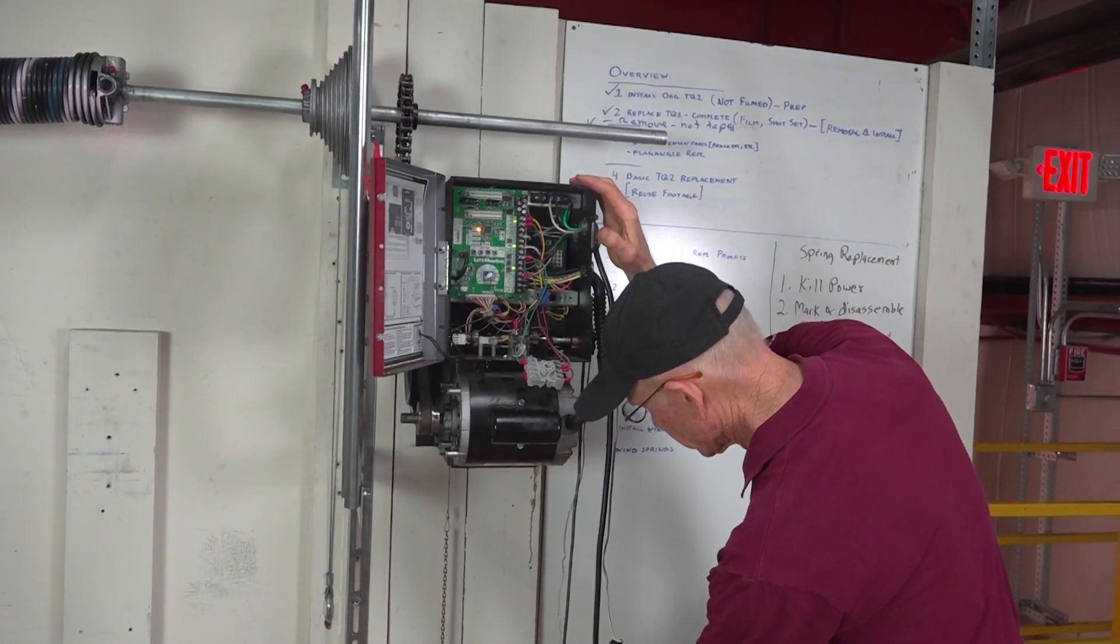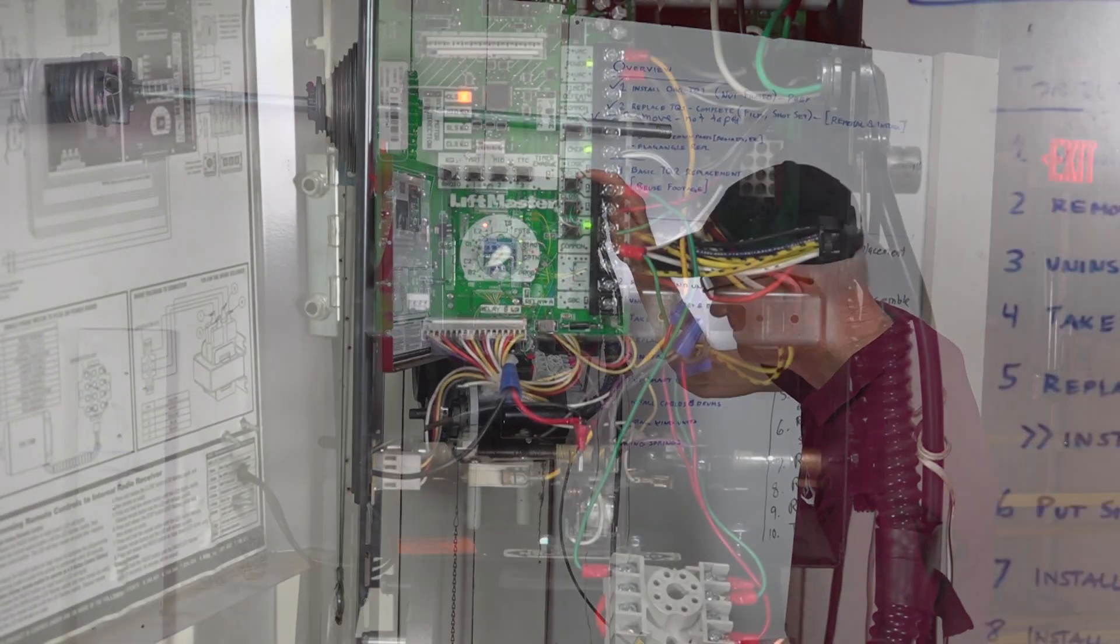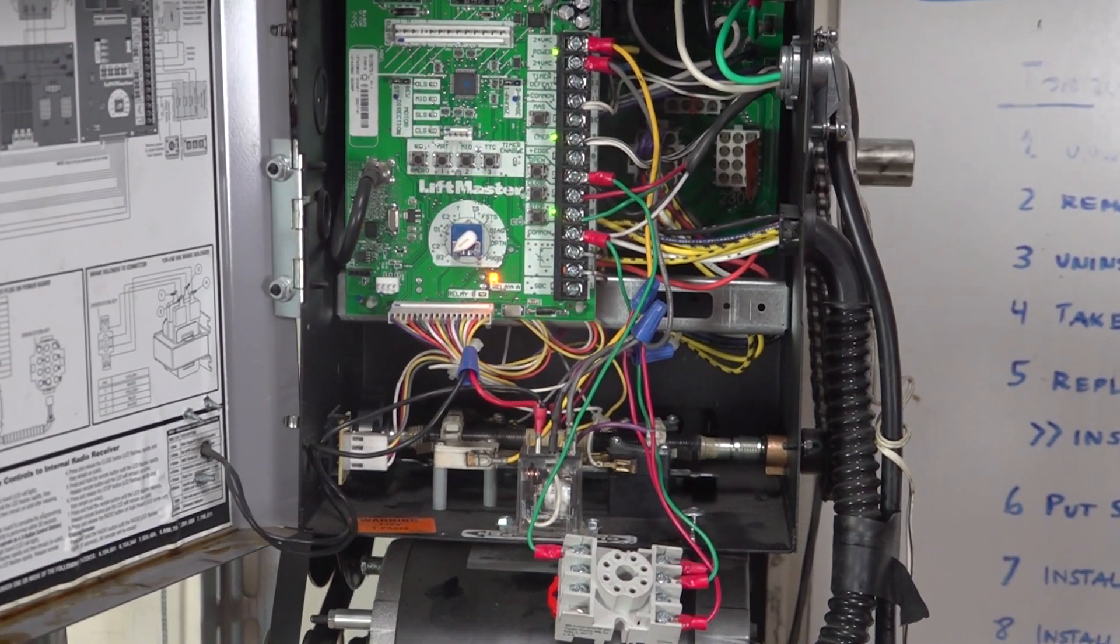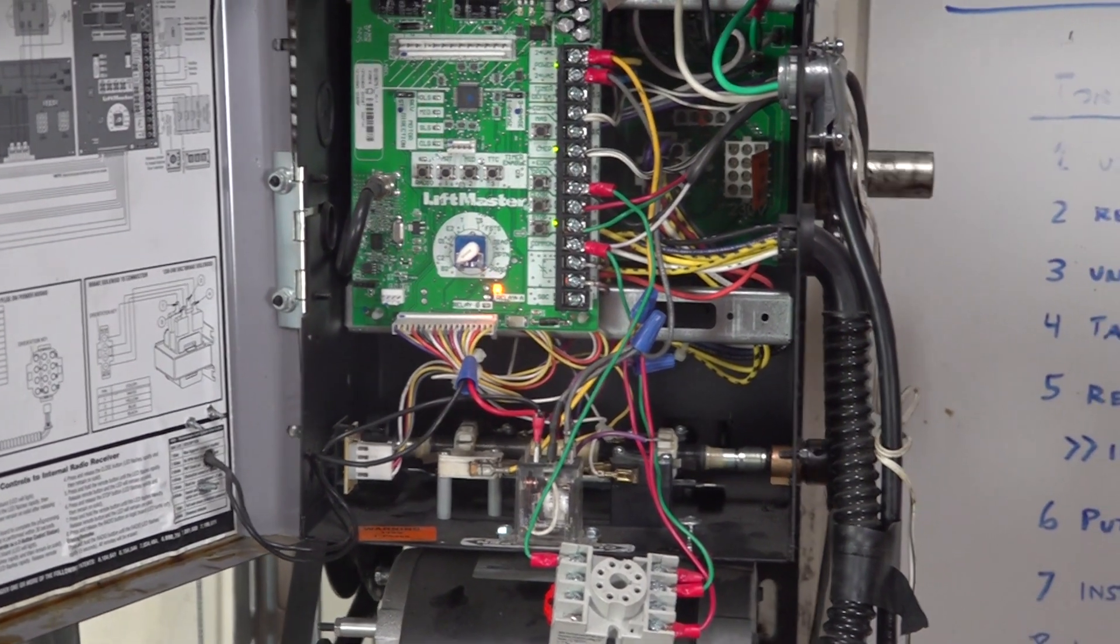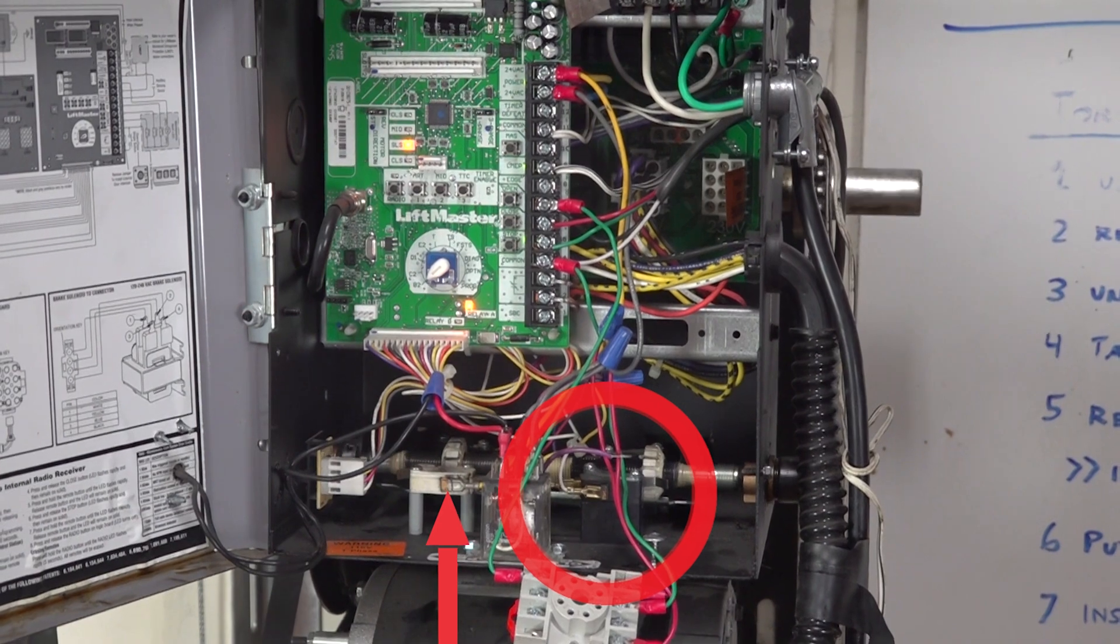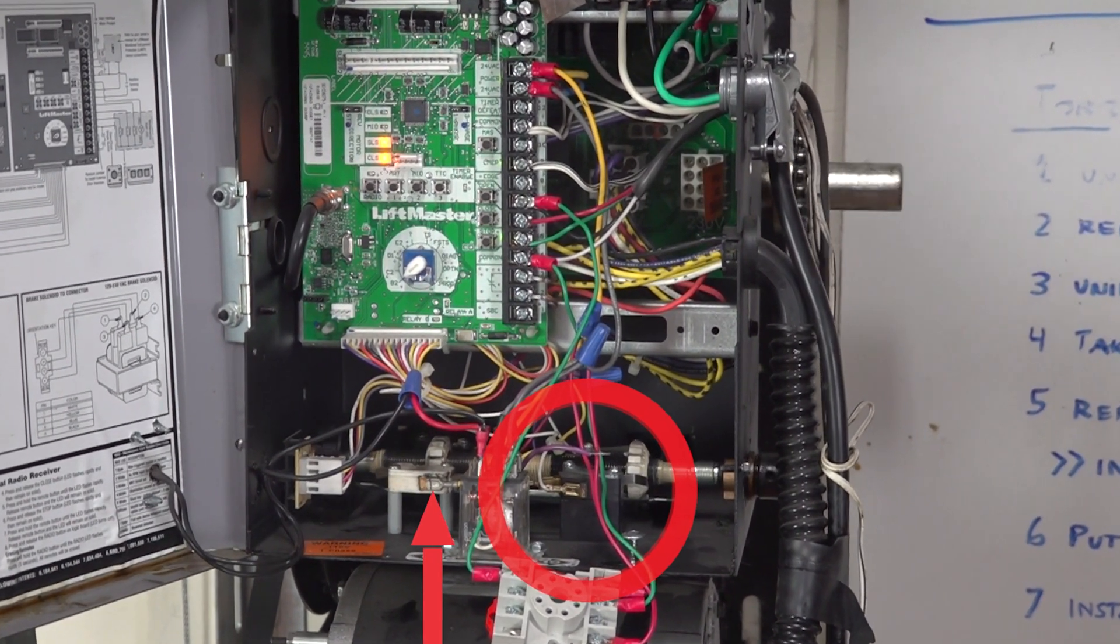When we push the closed button, the nuts travel to the right. And when the nut gets to the micro switch, it turns off the motor.